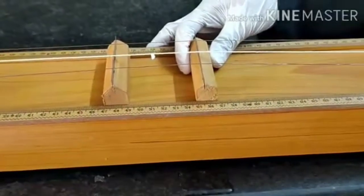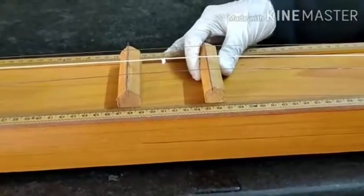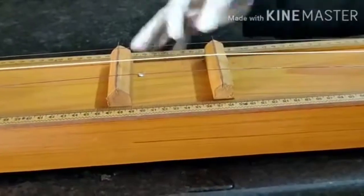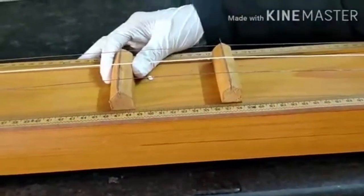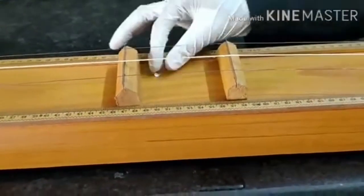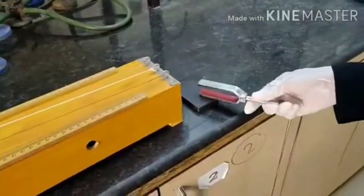Now slowly we will change the distance between the two knife edges and adjust the particular distance between them so that the paper rider falls off. Now observe the procedure carefully.